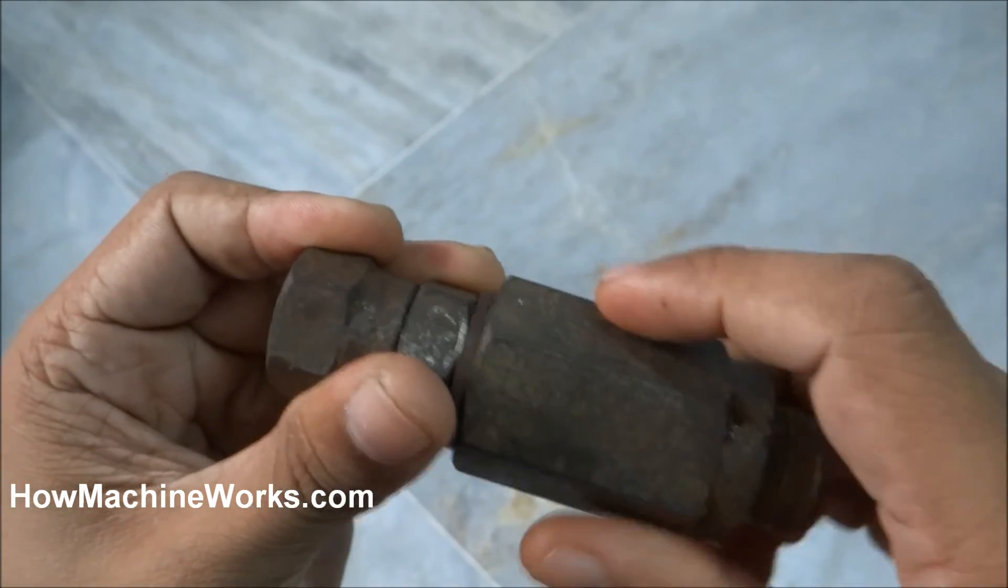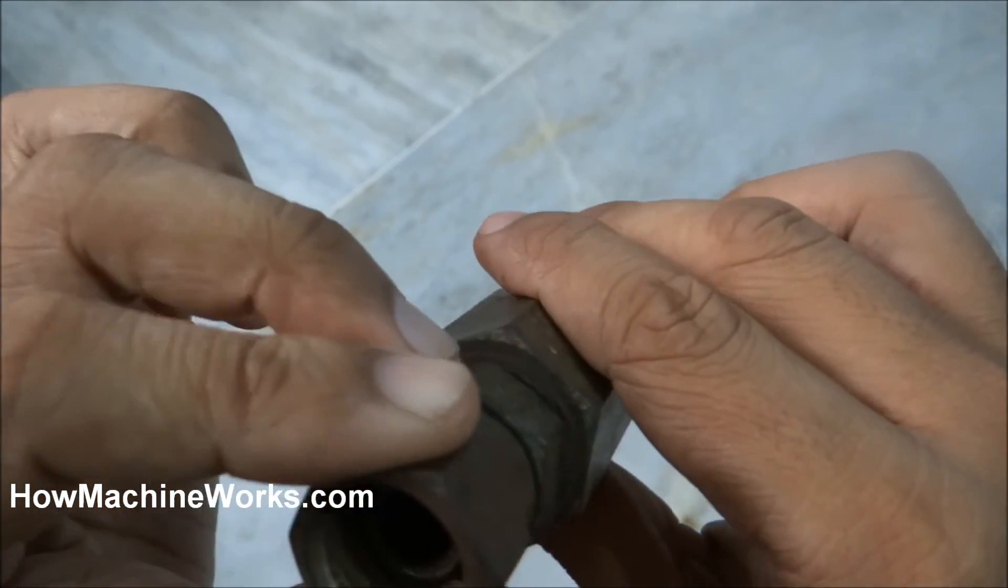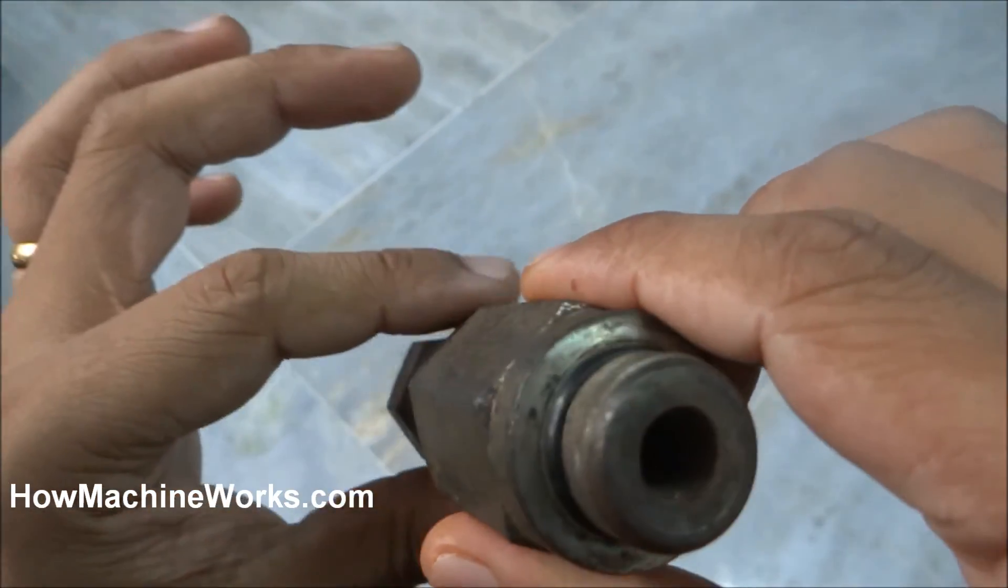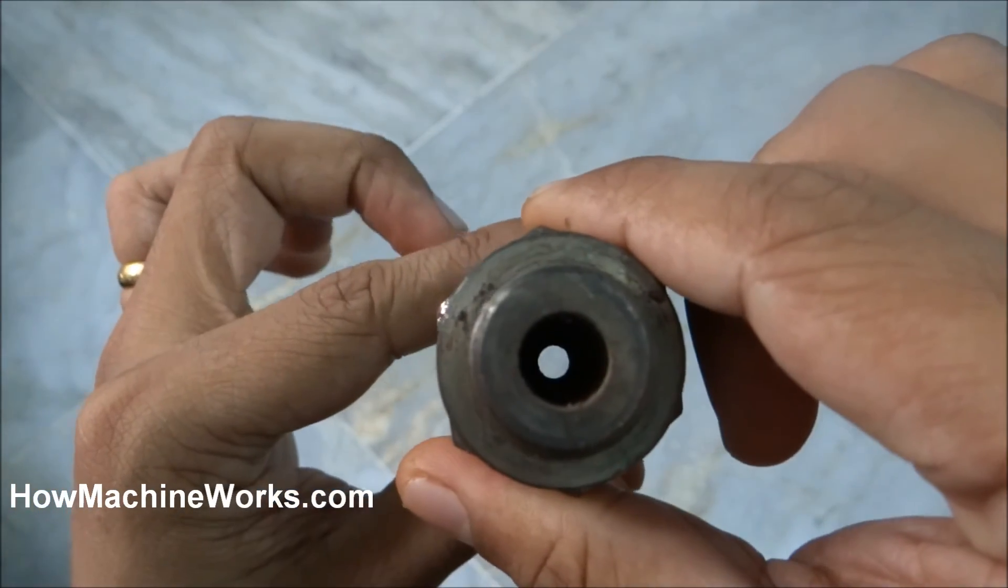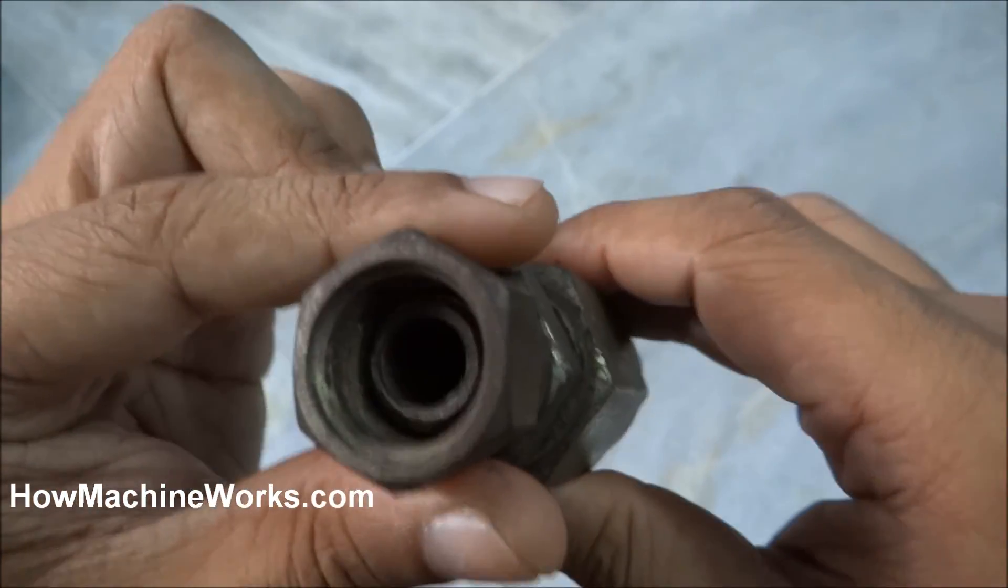This is used for hydraulic rams, etc., so that the forward motion can be fast and the reverse motion can be reduced. That means a dampening effect can be created. That's how a one-way restrictor works.